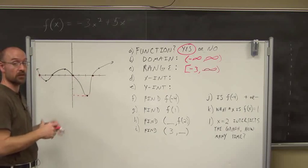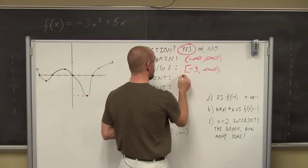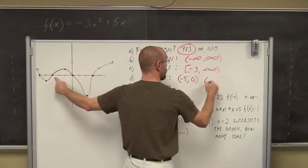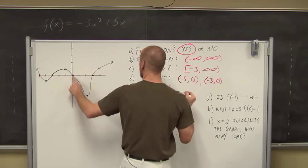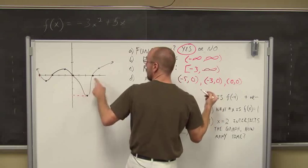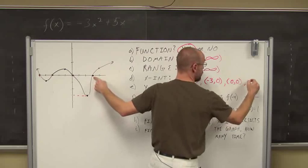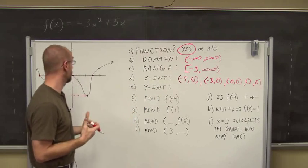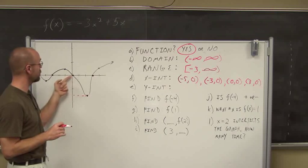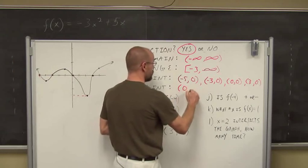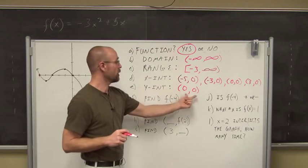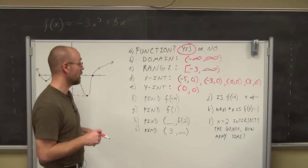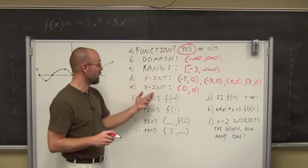There are actually four x-intercepts: an x-value of negative 5 when y is 0, an x-value of negative 3 when y is 0, an x-value of 0 when y is 0, and an x-value of 3 when y is 0. For the y-intercept, where is x equal to 0? That's the y-axis, and we see the graph goes through the origin. So when x is 0, y is 0. The origin is the shared intercept for both x and y axes.